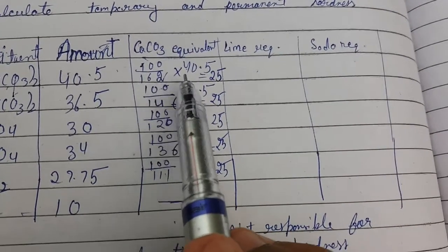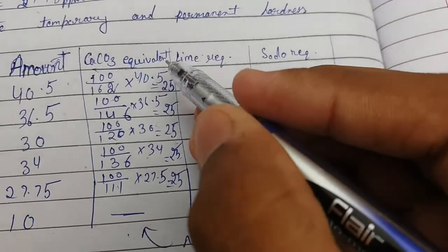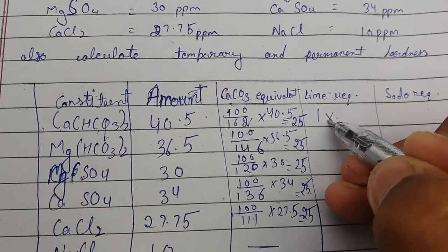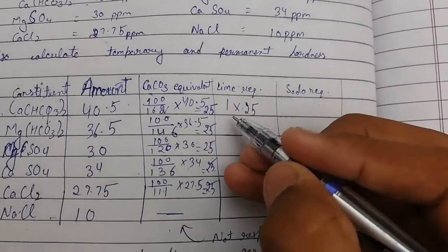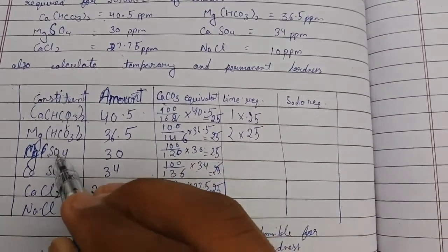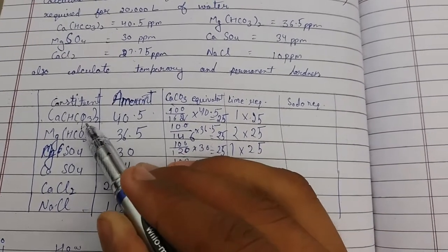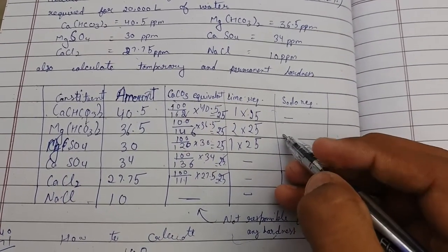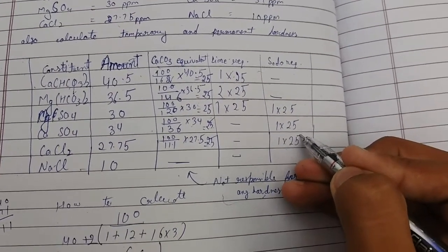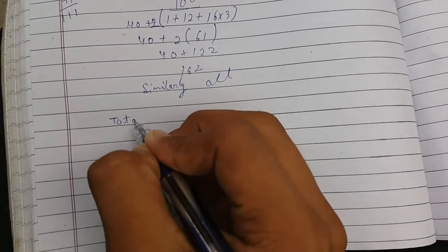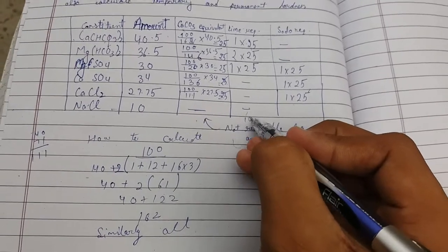Now we will multiply the amount with the equivalent so that we can get the required amount to be put in the reaction tank for the desired hardness removed. We will add two times the magnesium bicarbonate because in the reaction with CaCO3, it has two times the magnesium. Calcium sulfate and sodium chloride are not removed with lime - they are only removed with soda, so we will add it there.